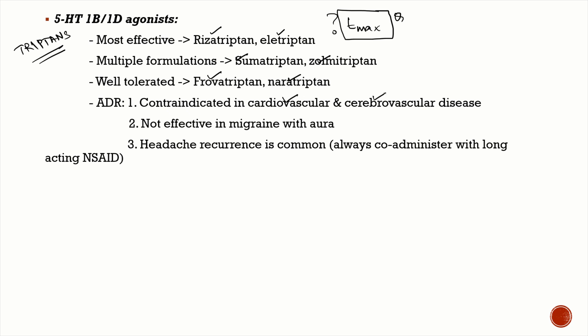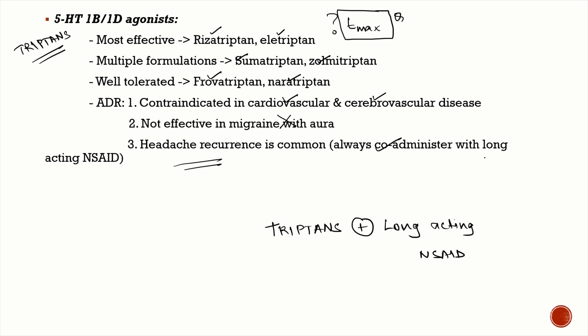Triptans cause vasoconstriction, so they are absolutely contraindicated in patients with cardiovascular and cerebrovascular disease. They are not effective during the aura phase and should only be used after the aura phase. Headache recurrence is common with triptans; to address this, triptans should always be combined with a long-acting NSAID. A common combination is sumatriptan with naproxen.